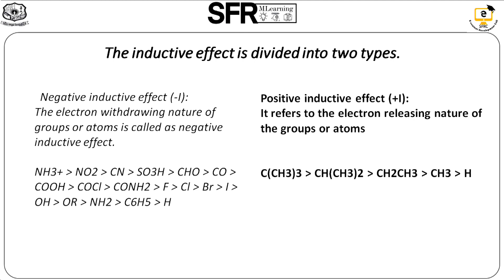The applications of inductive effect include bond length, dipole moment, relative strength of acids, and relative strength of bases. Bond length decreases with increasing inductive effect. For example, in methyl iodide, methyl bromide, and methyl chloride, the bond length decreases from iodide to fluoride. This is due to the minus I effect of halogens in the order: fluorine, chlorine, bromide, which is related to electronegativity.